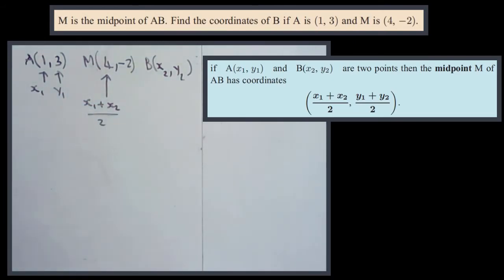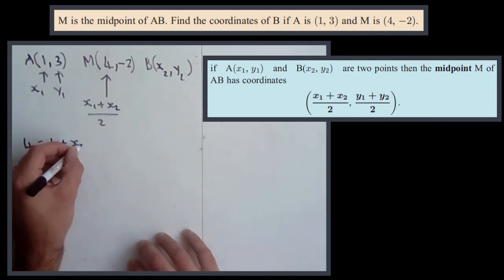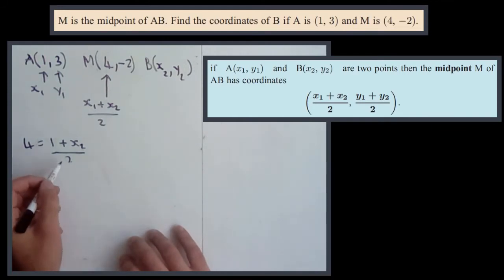So we can write an equation for that which is 4 = (1+x2)/2. 1 plus x2 is what we need to find, over 2. Now we need to solve for x2. So multiply both sides by 2.